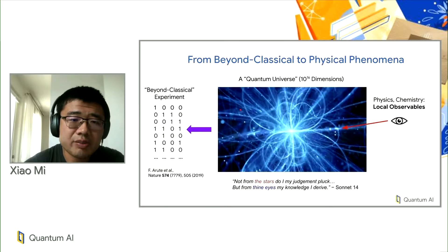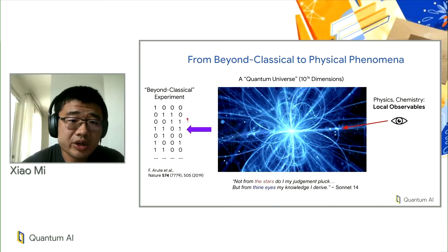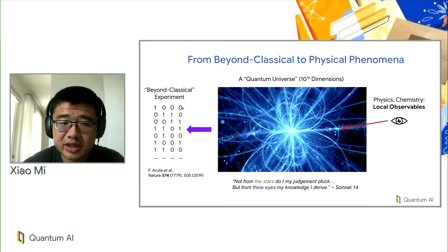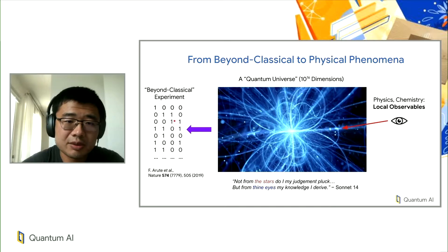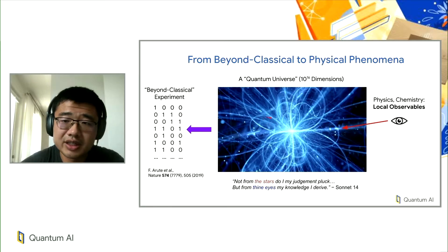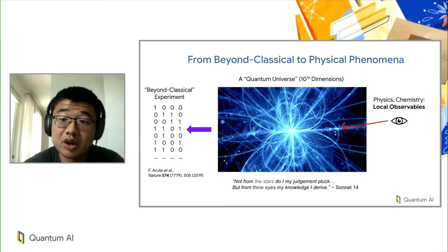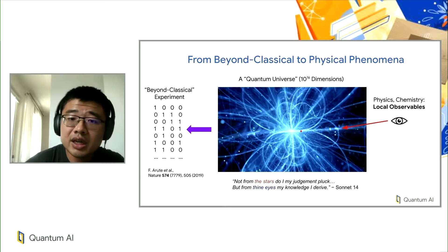Before I start, I would like to mention the general direction that the NISQ experiments in our group are moving toward. In the beyond-classic experiment we published two years ago, we studied a quantum system by essentially sampling the global state out of it — creating a complicated wave vector and sampling bitstreams. While useful for random number generators, it doesn't reveal certain information that physicists or chemists care about. In physics and chemistry, what you typically care about for a quantum system is what happens to local observables as you evolve the system forward.